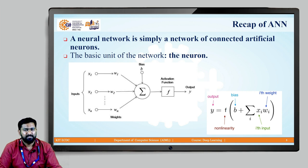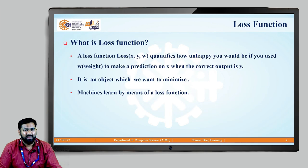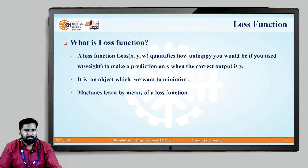Now, what is a loss function? When we pass an input feature x, we expect an output y. The model supplies weights w such that we expect output y, but we get a prediction y-cap which may not be exactly the same as y. The loss function quantifies how unhappy we are with prediction y-cap when the expected output is y. Training happens based on this loss function — it is an objective we want to minimize so that the prediction is closer to the real output.